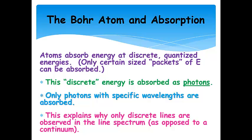Atoms absorb energy only at discrete, quantized energies — we saw this for atomic spectra. Only certain size packets of energy can be absorbed; everything else just passes through, nothing happens. These discrete packets of energy are absorbed as photons. Only photons with specific wavelengths are absorbed, and that's why only discrete, specific lines are observed in the line spectrum, as opposed to a continuum as we'd see for white light.